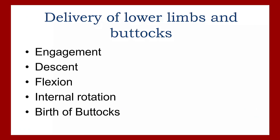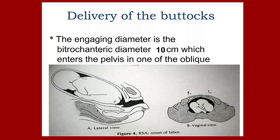In the delivery of the lower limbs and buttocks, a series of movements take place: engagement, descent, flexion, internal rotation, and birth of the buttocks. Once all these movements finish, we can say the delivery of the buttocks and lower limbs has taken place. The engaging diameter is the bitrochanteric diameter, which is 10 centimeters, entering the pelvis in one of the oblique directions.